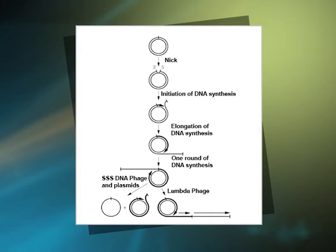The 3' end on the circle is lengthened while the growing point rolls around the circular template. The 5' end is displaced and forms a tail of single-stranded DNA that extends from the circle. The single-stranded tail is then converted into double-stranded DNA by synthesis involving RNA primers, as in the synthesis of the lagging strand of normal DNA replication.